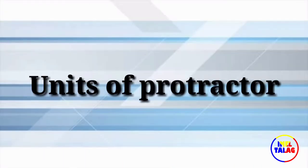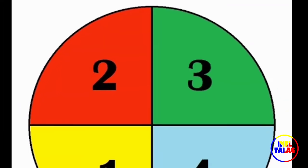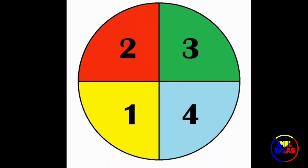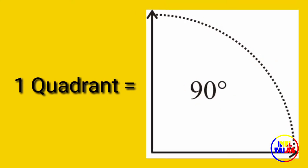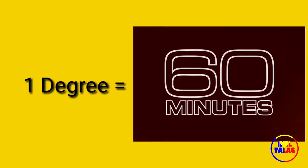Units of protractor: a full circle contains four quadrants. One quadrant contains 90 degrees. One degree contains 60 minutes. One minute contains 60 seconds.